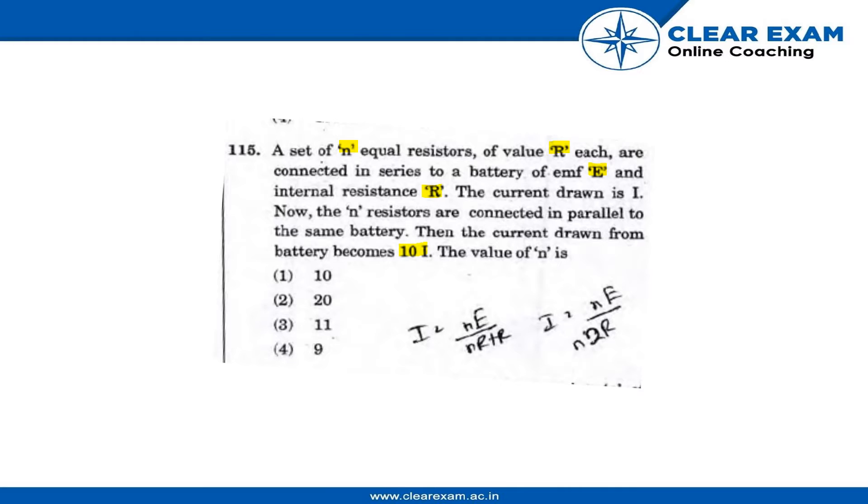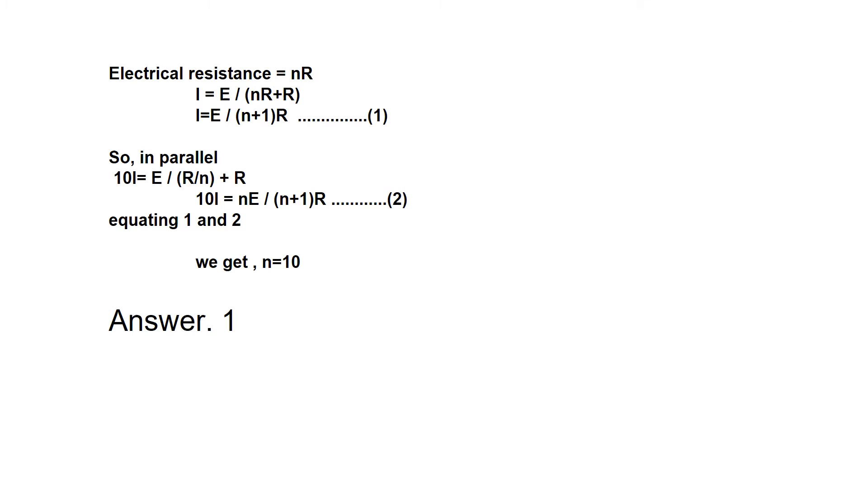We can say that the total electrical resistance would be N×R. Now current equals EMF upon resistance, so I equals E upon (NR + R), that would be I equals E upon (N+1)R. This will be our equation number one.